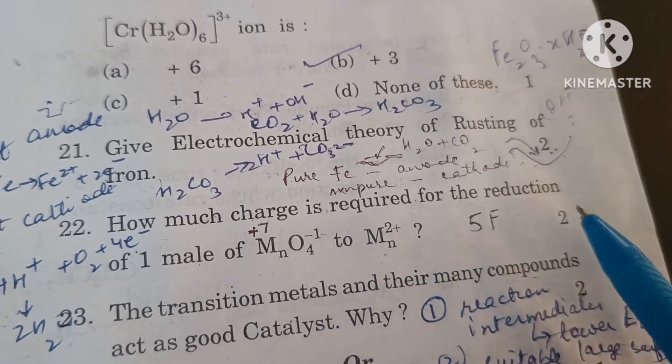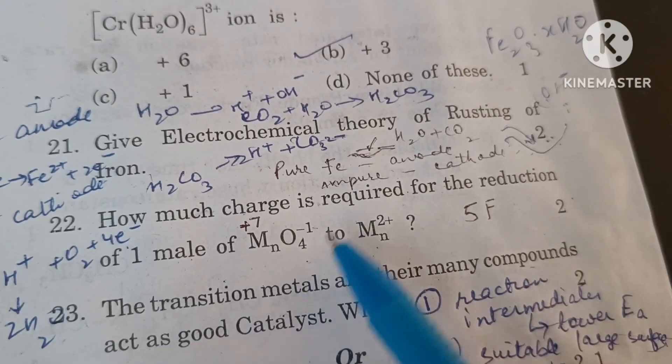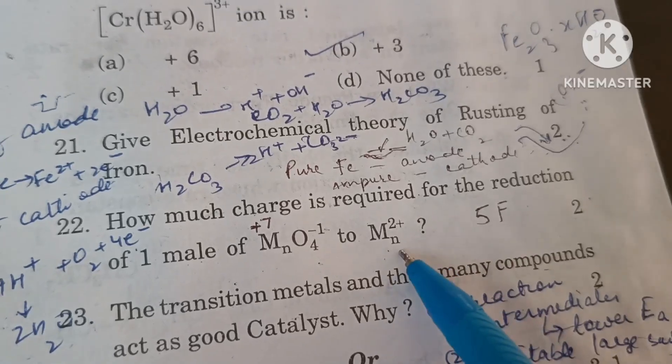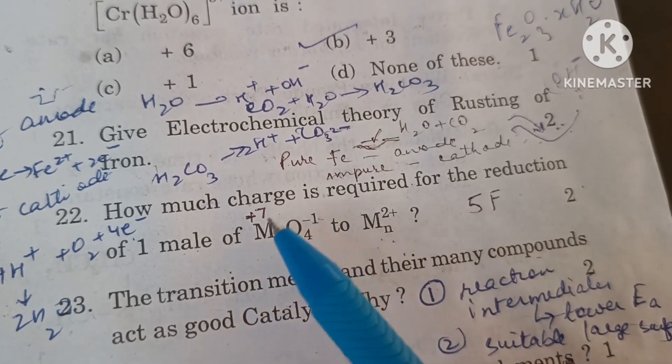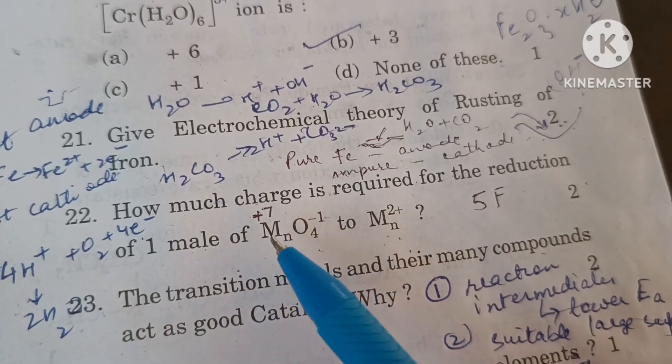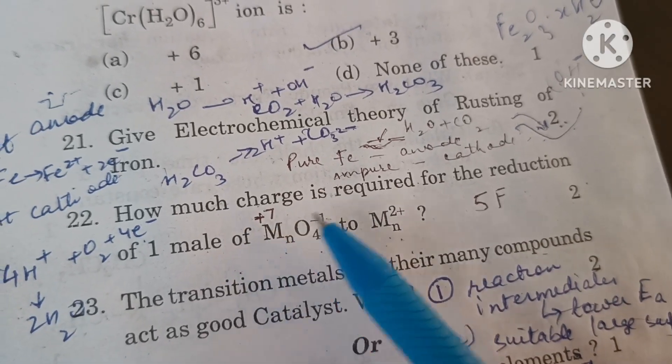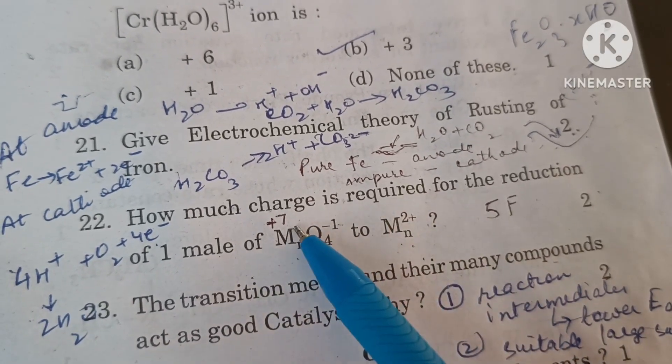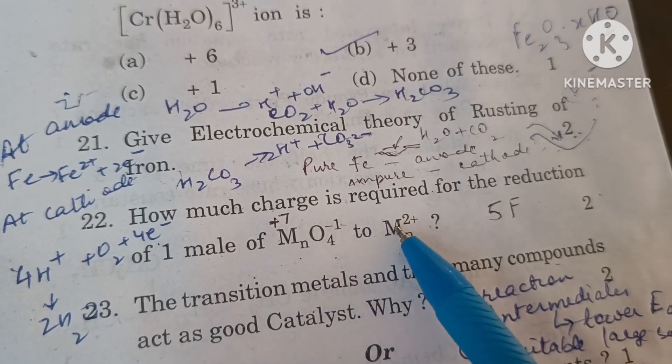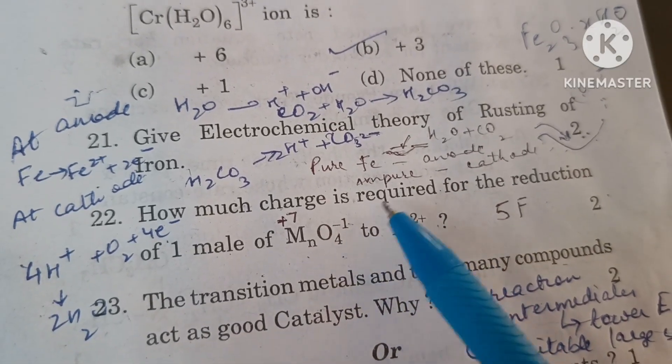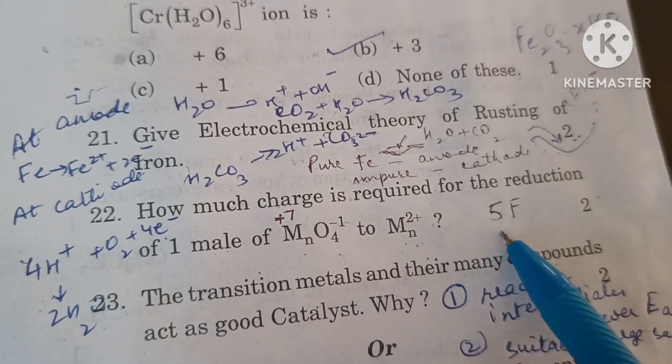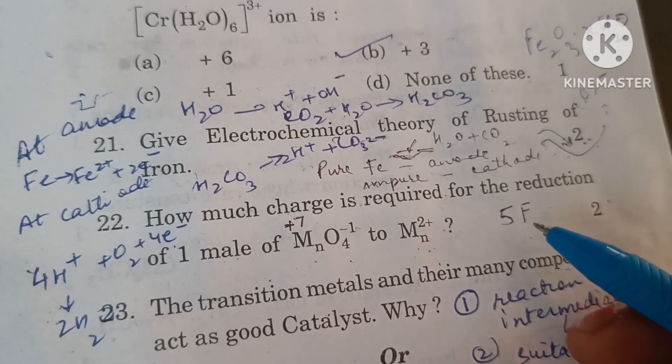How much charge is required for the reduction of one mole of permanganate ions to manganese 2+ ion? In permanganate ion the oxidation state of manganese is +7, it changes to +2. That means there is a difference of five electrons. So a charge carried by five mole of electrons is five Faraday. Five Faraday charge is required for reduction of permanganate to Mn2+.